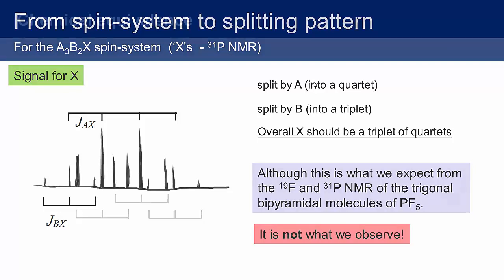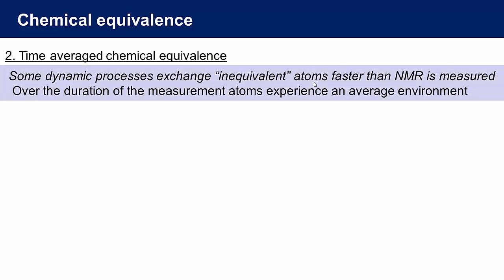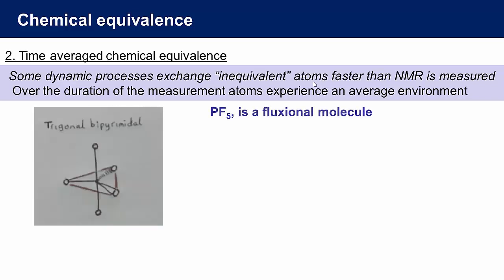There is another way in which atoms can become chemically equivalent in an NMR experiment. If there is some process that can exchange inequivalent atoms, and that process happens faster than the timescale on which the NMR spectrum is measured, in that case we would see an average signal from atoms exchanging between inequivalent sites. So coming back to the trigonal bipyramidal molecular structure of phosphorus pentafluoride, there is a process that exchanges the fluorine atoms in the axial positions with the fluorine atoms in the equatorial positions.